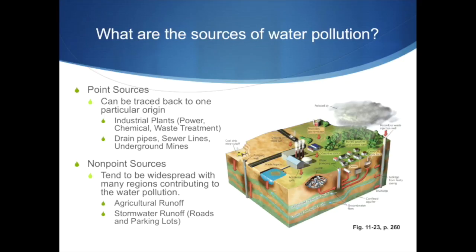A third question to ask now will be: what are the sources of water pollution? There can be two types of sources — either point sources or non-point sources. Point sources can be traced back to one particular origin. For example, industrial plants such as power, chemical, or waste treatment facilities, drain pipes, sewer lines, and underground mines.